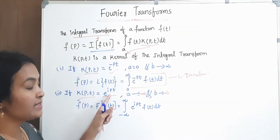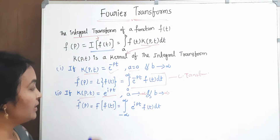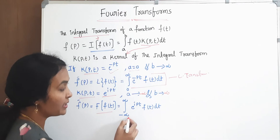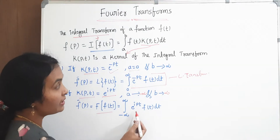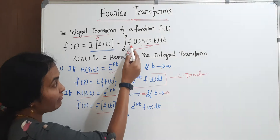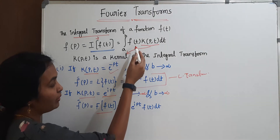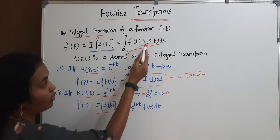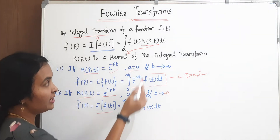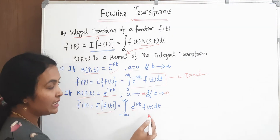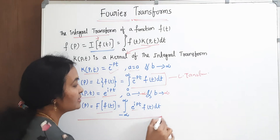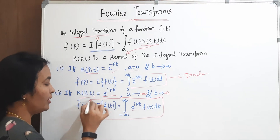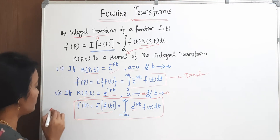If the kernel is the complex exponential, then the function will change to the integral from minus infinite to infinite. In the place of the kernel, the value is e to the power of i·pt times f(t) dt. This is nothing but our Fourier transform.